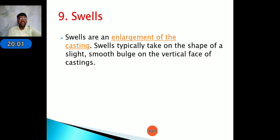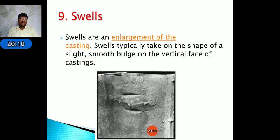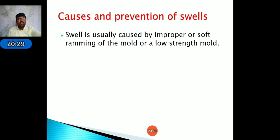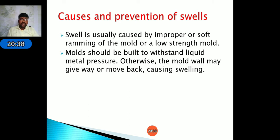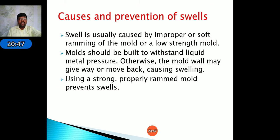Swells are enlargements of the casting, typically taking the shape of a slight smooth bulge on the vertical surfaces. Swells are usually caused by improper soft ramming of the mold or low mold strength. The mold must be built to withstand liquid metal pressure; otherwise the mold wall may give way, causing swelling. Using a strongly and properly rammed mold prevents swells — hard ramming is preferred over soft ramming.